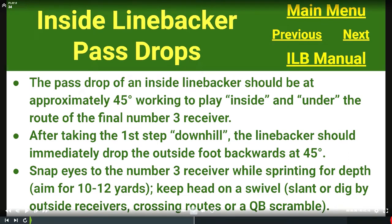At the high school level, inside linebackers are most effective when used to provide pressure. We play a lot of cover zero. But there are times when you're playing zone coverage — our matchup cover four, cover two, two-read type deal — where those inside linebackers' ability to pass drop and relate to receivers makes coverage airtight. Their pass drop is approximately a 45 working to play inside and under the route of the final number three receiver. If three goes out, I'm looking for something coming in replacing him; if three comes at me, that's what I'm hooking up on.